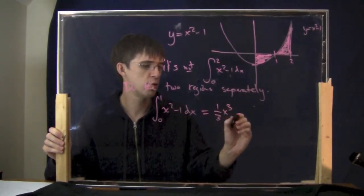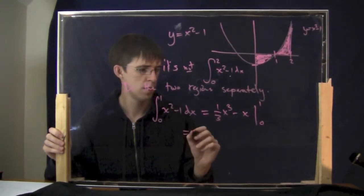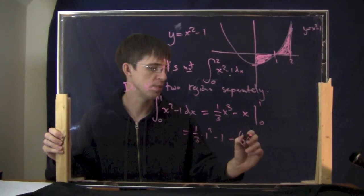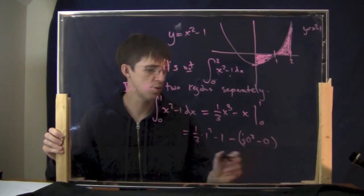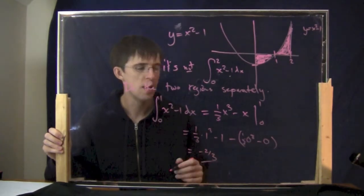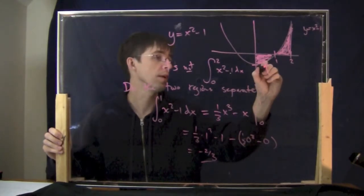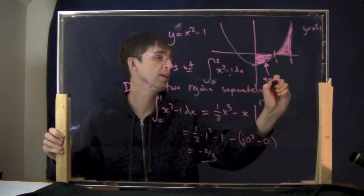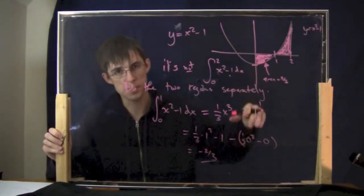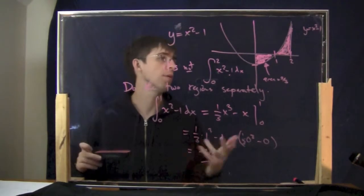Let's compute the first piece. The anti-derivative of x² - 1 is (1/3)x³ - x. Plugging in 0 and 1: (1/3)(1)³ - 1 minus (1/3)(0)³ - 0 = 1/3 - 1 = -2/3. The answer is -2/3, which is negative as expected because it's below the x-axis. The actual area of that first piece is 2/3.